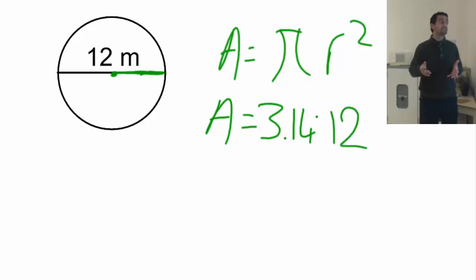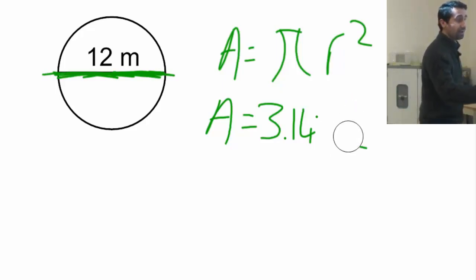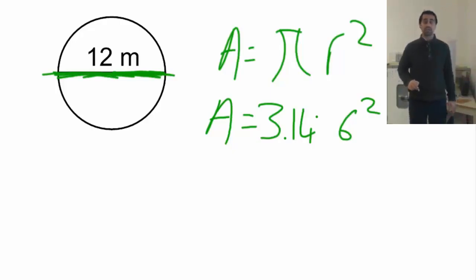Since diameter is double of the radius, that means radius is the half of the diameter. If the diameter is 12, if everything here is 12, half of that is supposed to be the radius, which is half of 12. In this case, 6. 6 squared. And go ahead, calculate and write down the number.